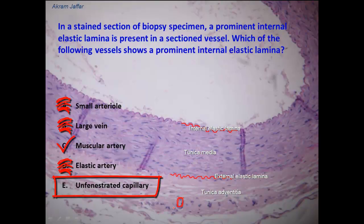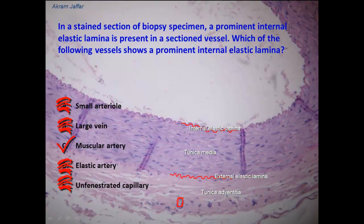Unfenestrated capillaries actually don't have a tunica media, and they don't have elastic laminae in their wall. They are capillaries — whether fenestrated, unfenestrated, or sinusoidal capillaries — all capillaries do not have elastic laminae.